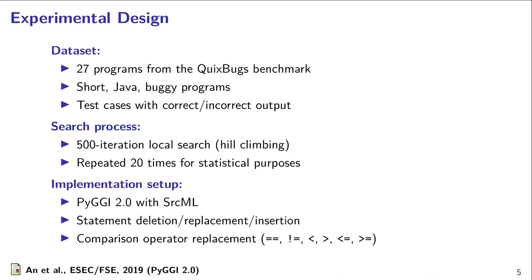To compare these two ways of generating GI edits, we consider 27 programs from the QuixBugs benchmark. These are all short programs written in Java that each contain a single bug. QuixBugs provides correct and incorrect test cases to guide the search, which is a local search with 500 steps. All experiments are repeated 20 times. We use four types of edits: the three usual statement types — deletion, replacement, and insertion — plus comparison operator replacement, which takes one of six operators and replaces it with another.